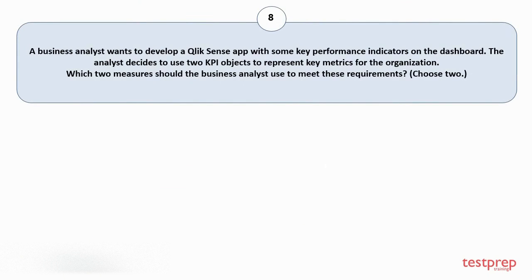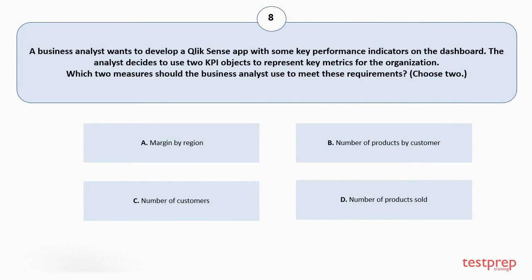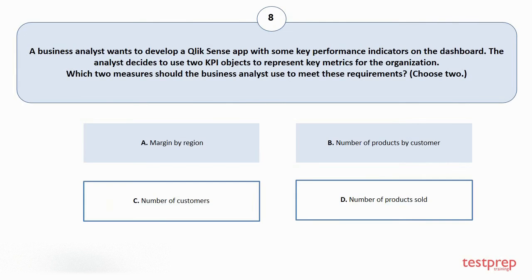Question number 8. A business analyst wants to develop a Qlik Sense app with some key performance indicators on the dashboard. The analyst decides to use two KPI objects to represent key metrics for the organization. Which two measures should the business analyst use to meet these requirements? Choose two. Your options are: A. Margin by region. B. Number of products by customer. C. Number of customers. D. Number of products sold. The correct answers are option C and D.